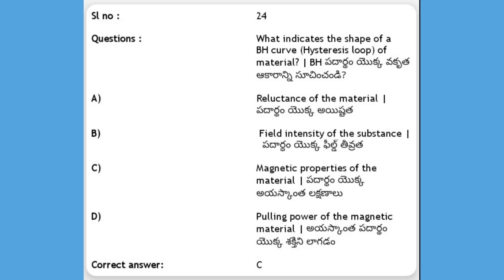Next, what does the shape of a BH curve of a material indicate? Options: A) reluctance of the material, B) field intensity of the substance, C) magnetic properties of the material, D) coercive power of the magnetic material. The answer is C, magnetic properties of the material. The BH curve shows magnetic properties — B represents flux density and H represents magnetizing force.